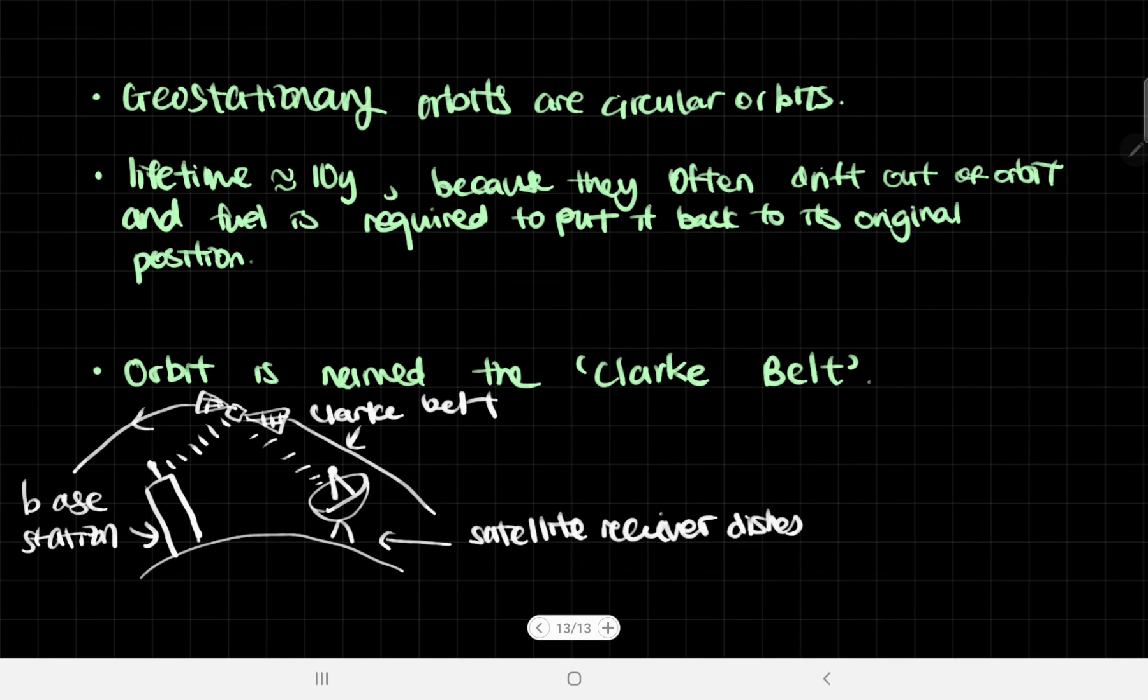Lastly, geostationary orbits are circular orbits and have a lifetime of around 10 years. Why can't they orbit indefinitely? Because they often drift out of orbit, and fuel is required to put it back into its original position. This fuel runs out after 10 years. They drift probably due to things like air resistance, which is very negligible at such height but still exists.